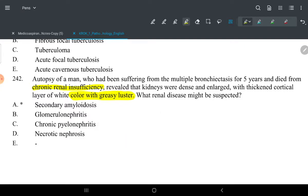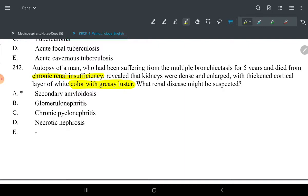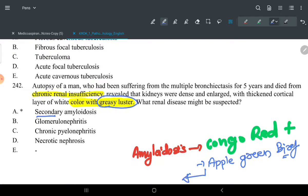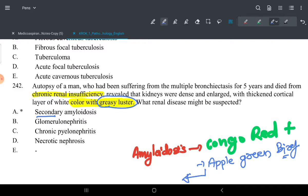Next question number 242. You can see easily autopsy of a man who had been suffering from multiple bronchiectasis and died from chronic renal insufficiency. Kidney was dense and large, thick cortical, colored with greasy luster. It is again. Why I gave this term as KROK-specific? Because these are outdated terms and only KROK uses this thing. If you remember, I told you to identify amyloidosis, keep in mind: first Congo red positive, second apple green birefringence, and it is also called greasy luster or synonyms. This is secondary.